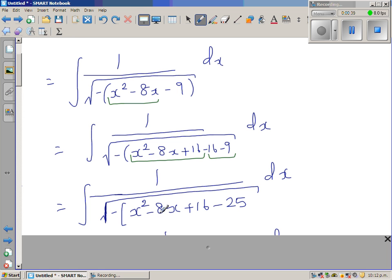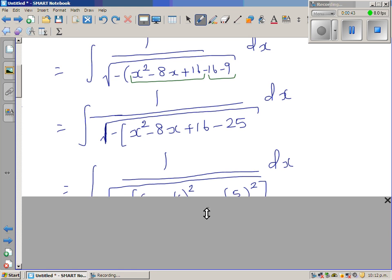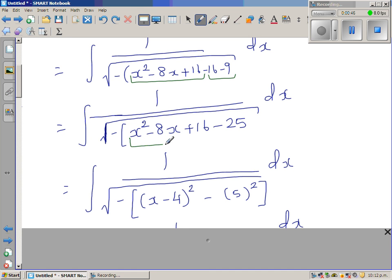So this is nothing but, this step is very clear. So this is a perfect square of x minus 4 the whole squared minus 5 squared.